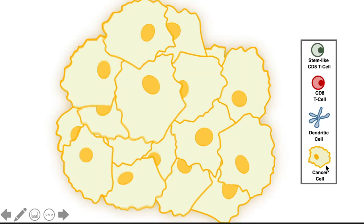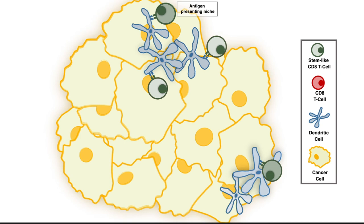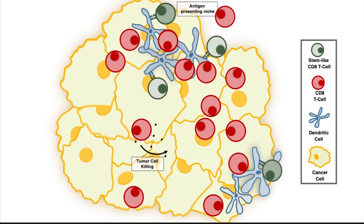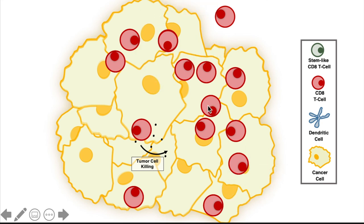To summarize, the model we are proposing is that in tumors with a productive immune response, there are areas of high antigen-presenting cell density which serve as homes for the stem-like CD8 T-cells that give rise to new terminally differentiated cells and sustain the antitumor T-cell response. Conversely, when these antigen-presenting cell dense regions are lost, the stem-like T-cell population in the tumor is lost, and the antitumor T-cell response fails.